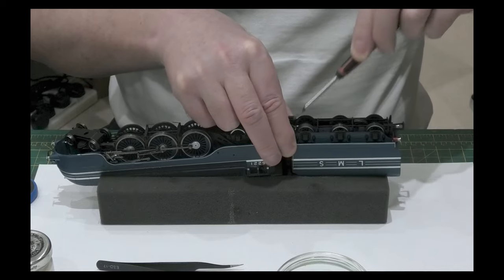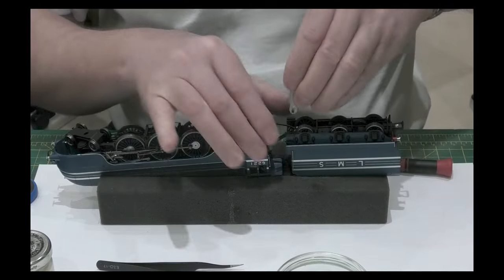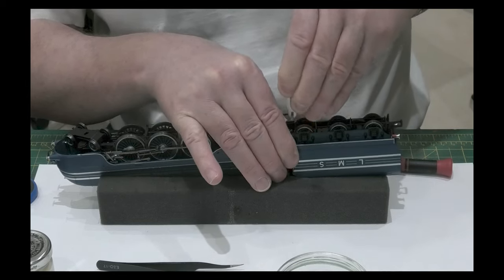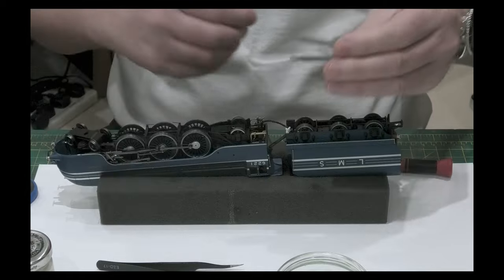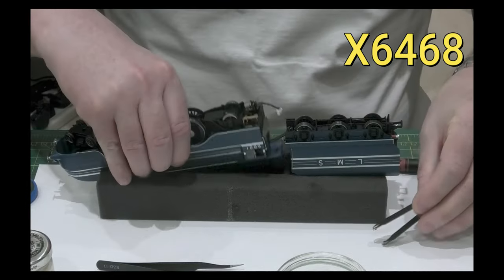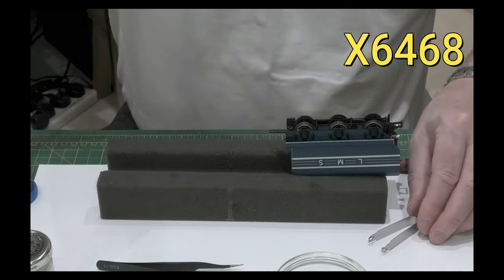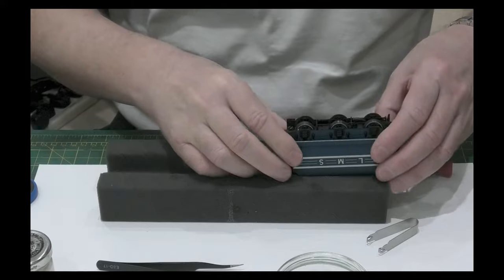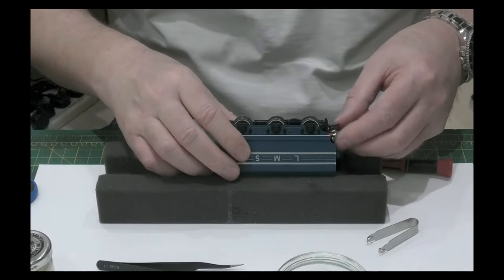It grips it and out it comes, and that's a Hornby X6468. Next thing you do is get rid of the loco, move it right out the way so you've no risk of clattering it or damaging it.